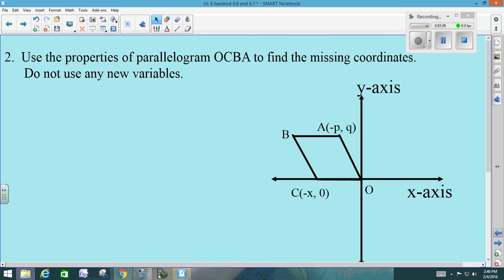We're going to go back to number two now. This one used the properties of parallelograms to find the missing coordinates. And then this one tells us, again, not to use any new variables. So O is located at the origin, so we know that's going to be 0,0. C is at negative X, 0, because I didn't go up or down. A is at negative P,Q, and we still have to find B then. Negative X just means I went left. How far left did I go to get here? X. Good. I went X.